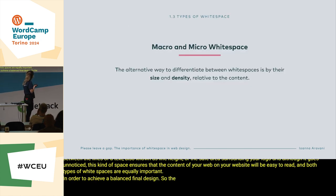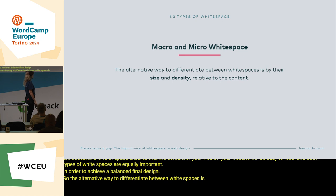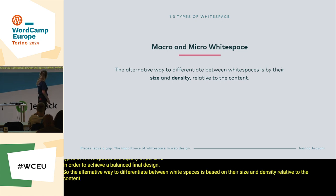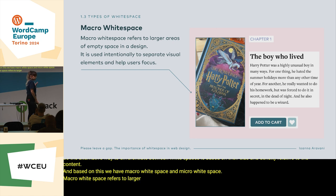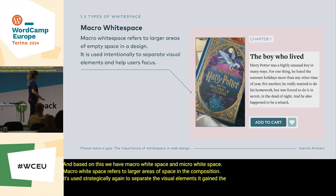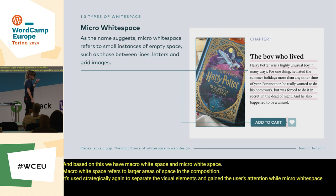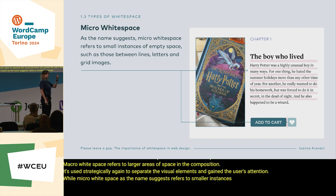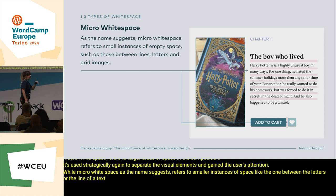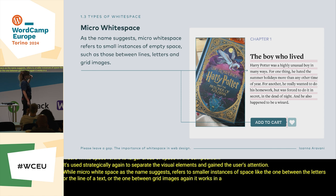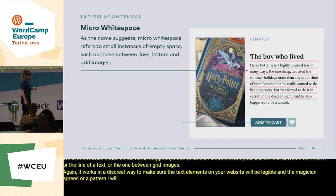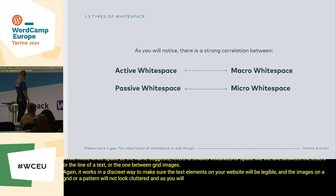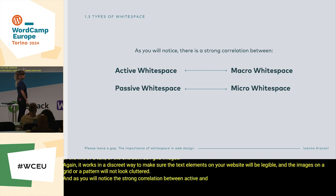The alternative way to differentiate between white spaces is based on their size and density relative to the content. Based on this, we have macro white space and micro white space. Macro white space refers to larger areas of space in a composition, used strategically to separate visual elements and guide the user's attention. Micro white space, as the name suggests, refers to smaller instances of space — like the space between letters or lines of text, or between grid images — working in a discrete way to ensure text is legible and images in a grid don't look cluttered. There's a strong correlation between active and macro white space, and passive and micro white space.